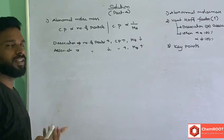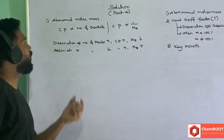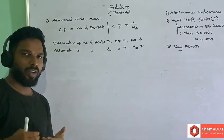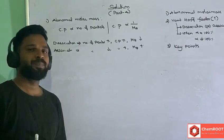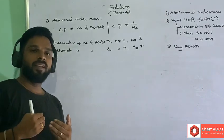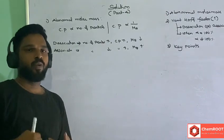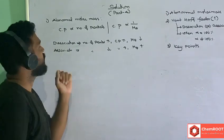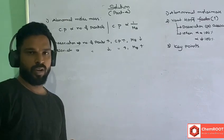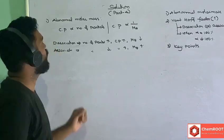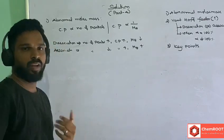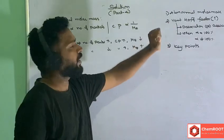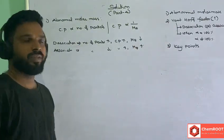So what is generally called abnormal molar mass — if the molecular weight we are getting is higher or lower than the expected value, we are calling it abnormal molar mass. So in order to avoid that abnormal molar mass, one factor will be introduced.